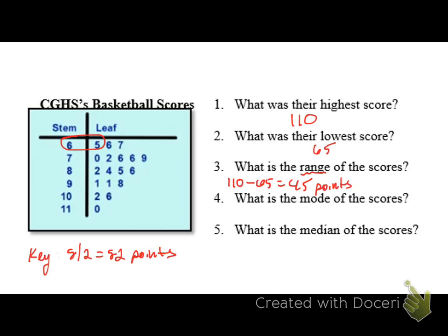Mode, if you can remember from elementary school, mode is the score that occurs the most often. And the score that occurs the most often, if you look, you've got two 76s, and you've got two 91s. So, 76 and 91 are kind of both the modes.